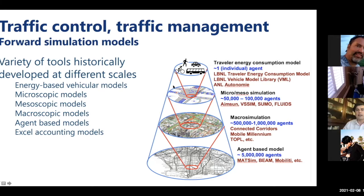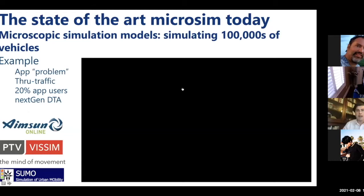Part of the revolution we see is that the individual vehicle level over the last five years has become tractable, calibratable, and there's enough data to make it work at scale. The notion that you could only use it for a few intersections and traffic lights is over. We're not far from being able to run cities at that level of granularity, and that's the anchoring of our work.